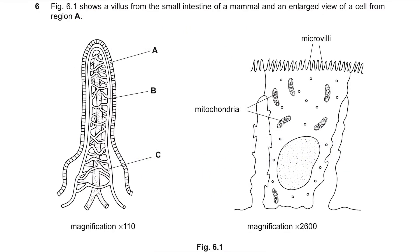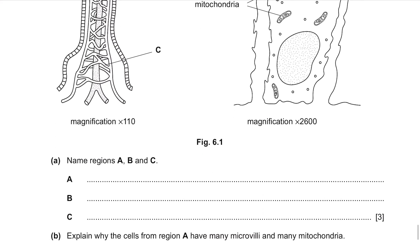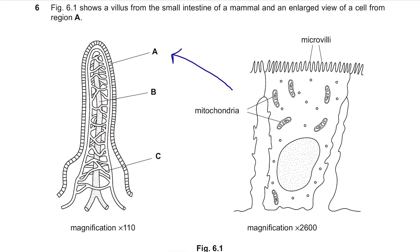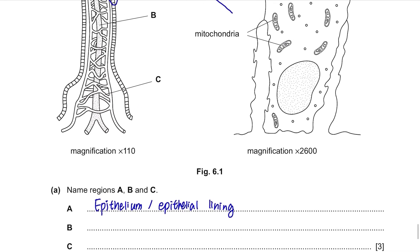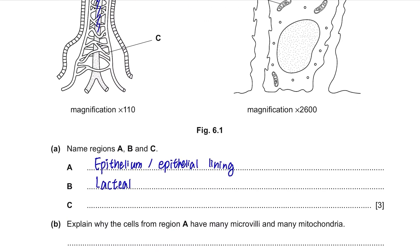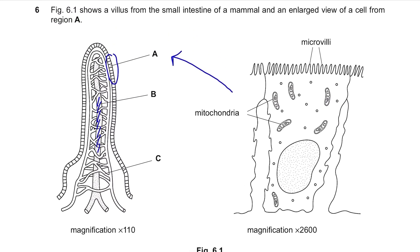Question 6. Figure 6.1 shows a villus from the small intestine of a mammal and an enlarged view of a cell from region A. Part A: name regions A, B, and C. Region A is the epithelium or epithelial lining at the outermost part of the villus. Region B in the middle is the lacteal — a lymphatic capillary transporting substances to and from the small intestine. Region C contains the blood vessels surrounding the lacteal; you can also write capillary.